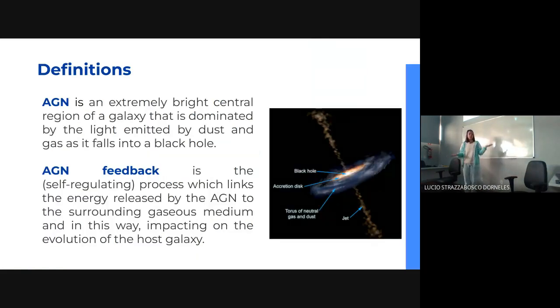First, I want to explain two things that I'm talking about. AGN and feedback. An AGN is an extremely bright central region of a galaxy that is dominated by light emitted by dust and gas as it falls into a black hole.